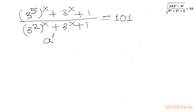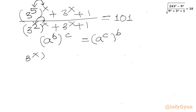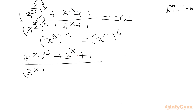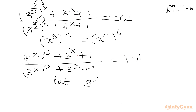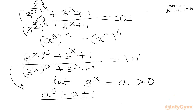Now I will apply the exponential property: (a^b)^c equals (a^c)^b. So the equation becomes: 3^(5x) plus 3^x plus 1, divided by (3^x)^2 plus 3^x plus 1, equal to 101. Now substitution time. Let us consider 3^x equal to a. The condition on a is that a must be positive.